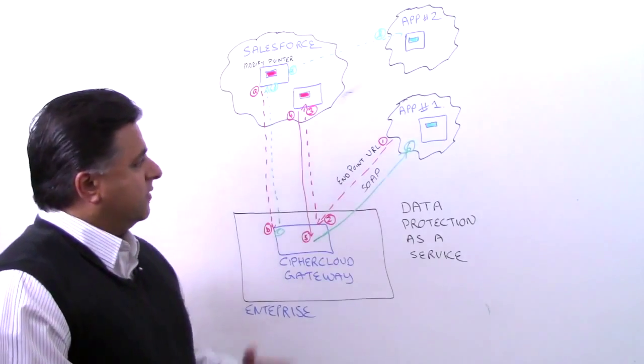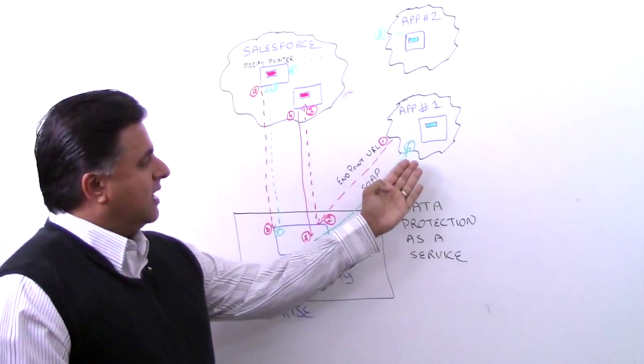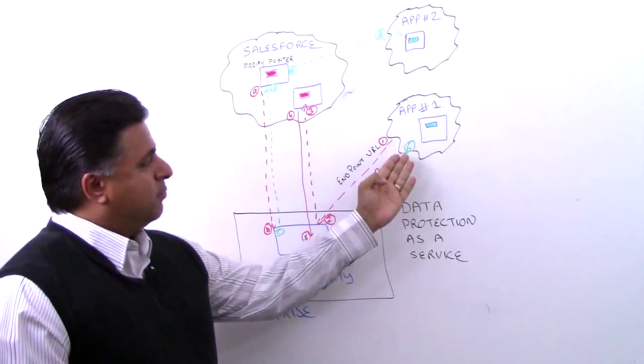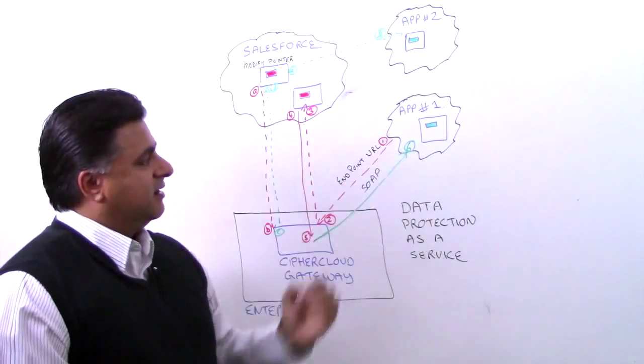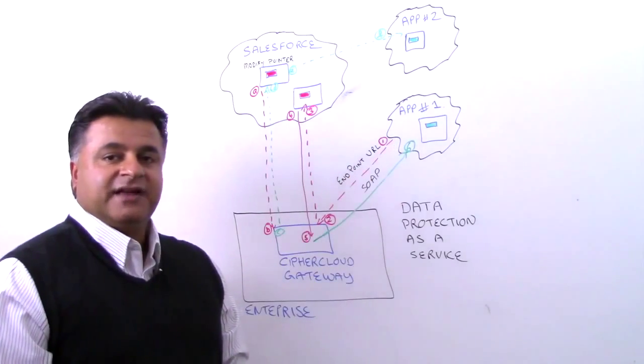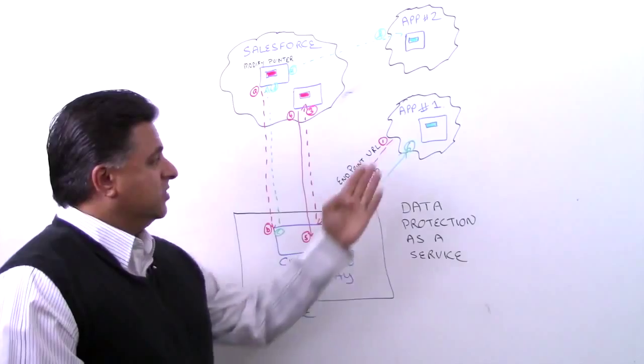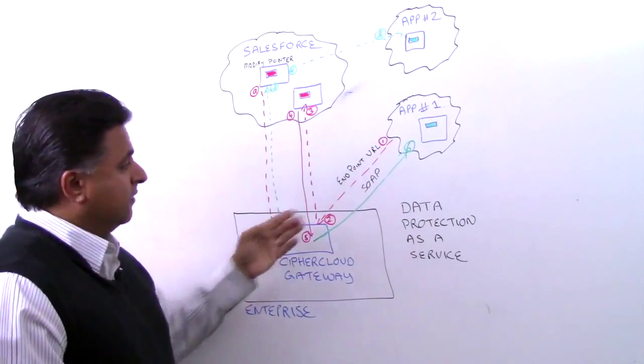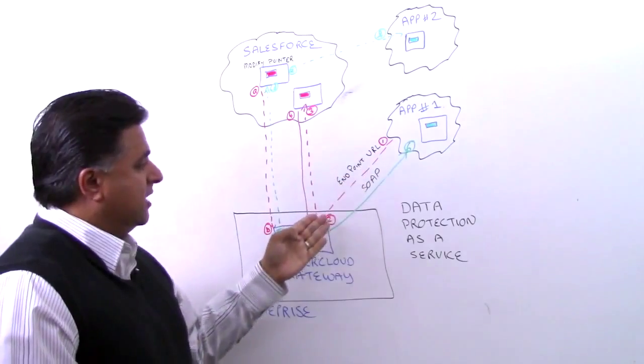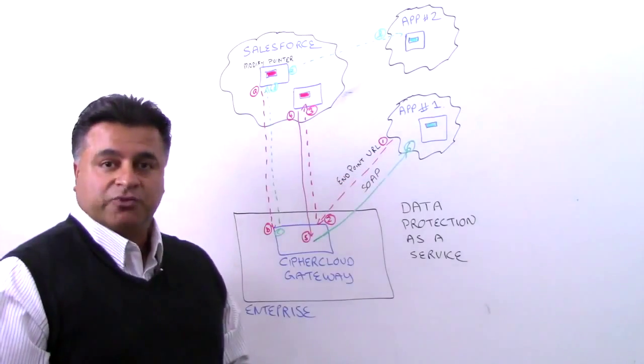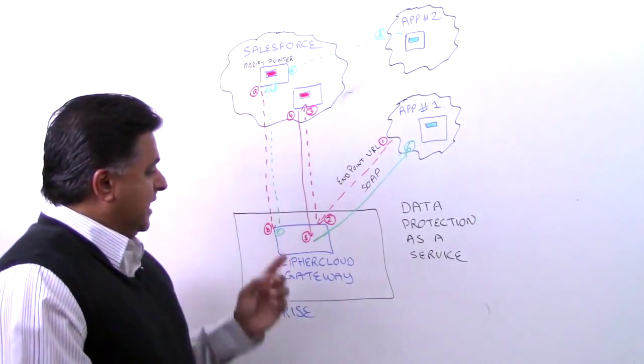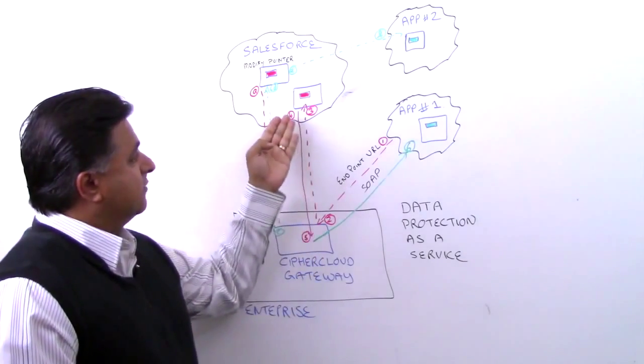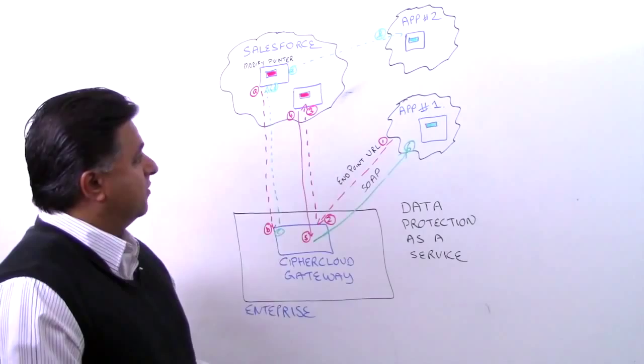I'll start with this application number one, and it requires that information from Salesforce. We actually use an endpoint URL here depicted in number one. That means we change the destination of that request to point to the CypherCloud gateway in the enterprise domain. So that first request comes through, and we're actually using a SOAP request in this case. It hits our gateway. We actually then forward that request to Salesforce, as you see here in step two and three, and we obtain that encrypted piece of information.